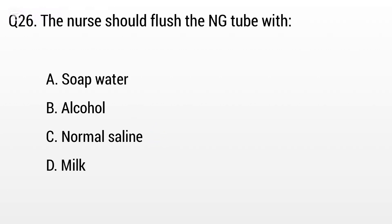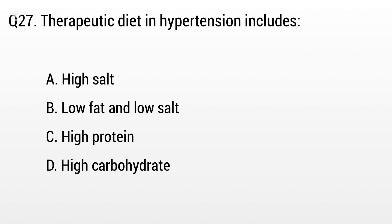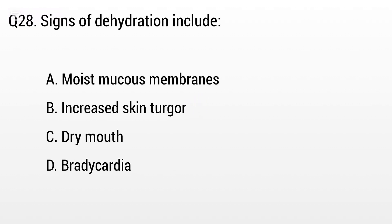Question 26: The nurse should flush the NG tube with? Options: A: Soap water, B: Alcohol, C: Normal saline. The right answer is option C: Normal saline. Question 27: Therapeutic diet for hypertension includes? Options: A: High salt, B: Low fat and low salt, C: High protein. The right answer is option B: Low fat and low salt.